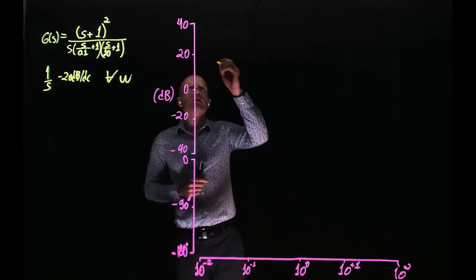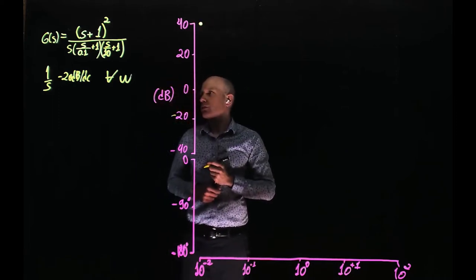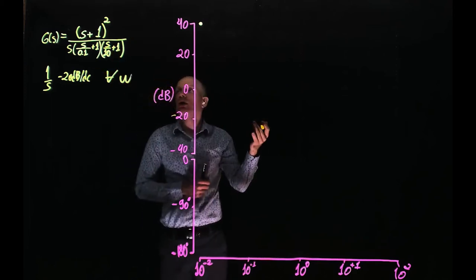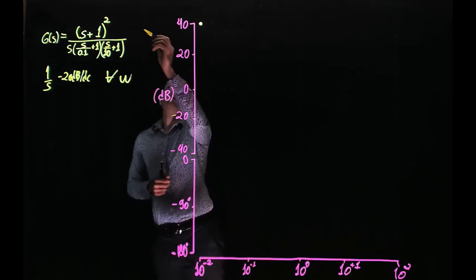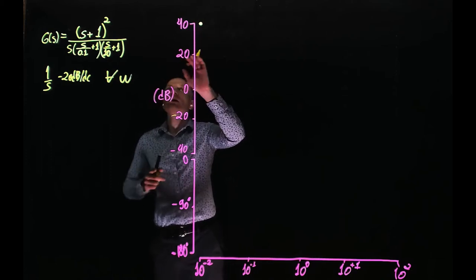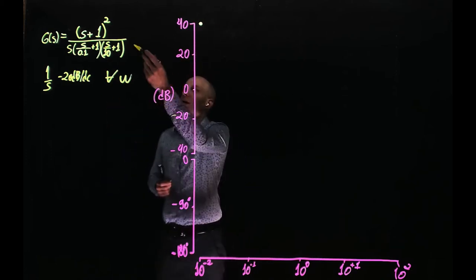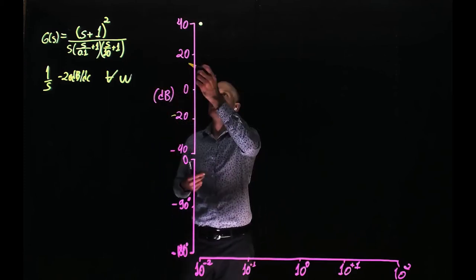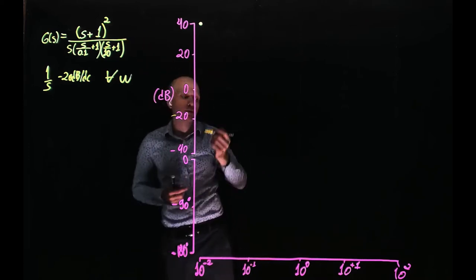So for this specific Bode plot, we start at 40 dB. The constant that multiplies all this is 1, and 20 log of 1 is 0, so we don't have to add anything to it. But if we had, for instance, a gain of 10 times this, then the Bode plot would shift up — 20 log of 10 is 20, so 40 plus 20 would be 60. But in this example we have 1, so 20 log of 1 is 0, and 40 plus 0 is 40.